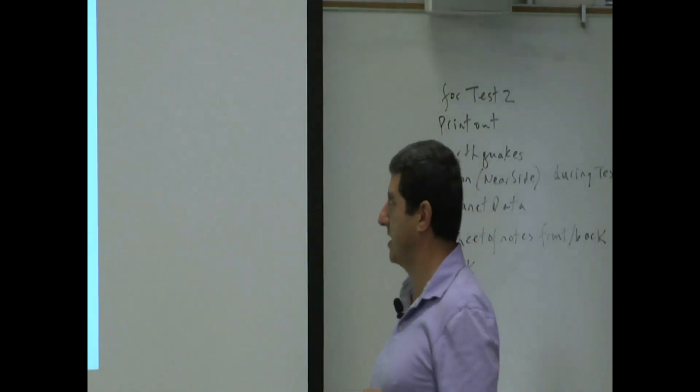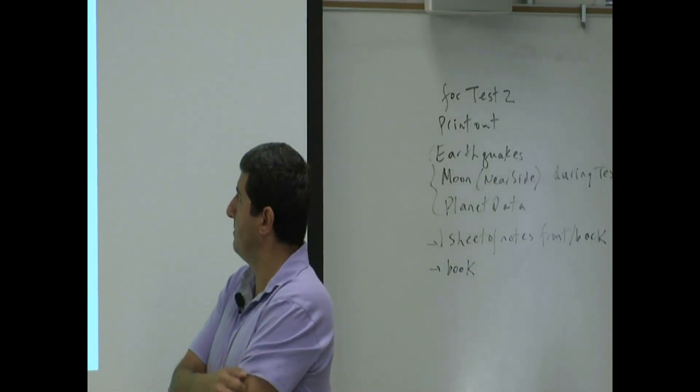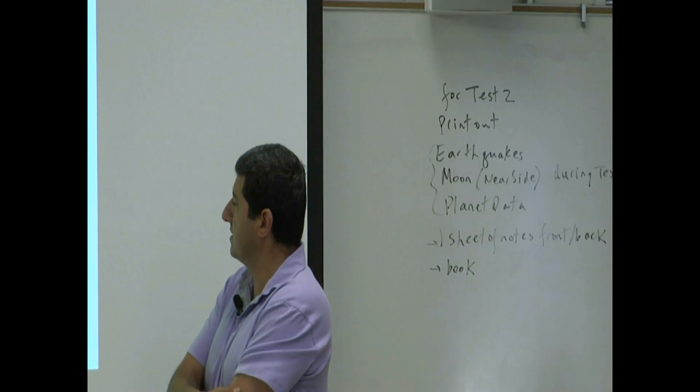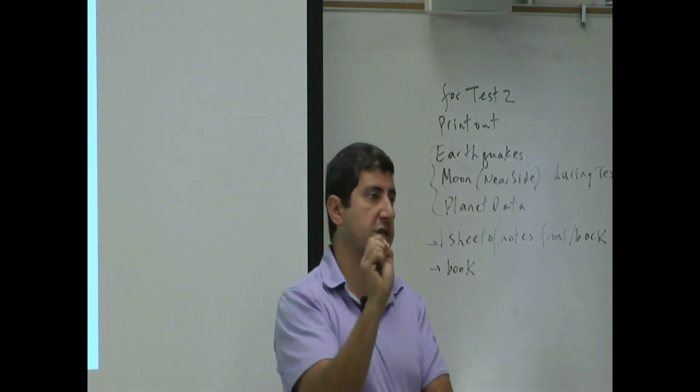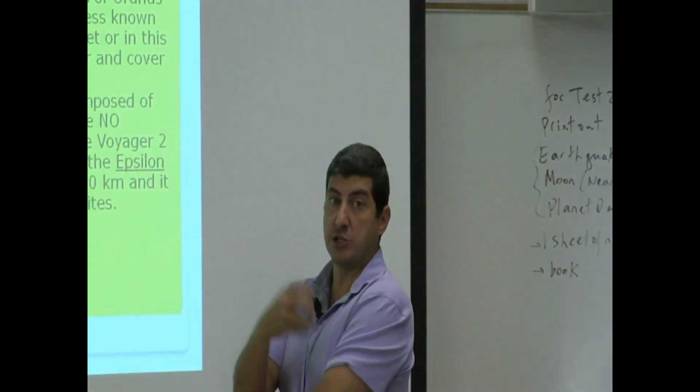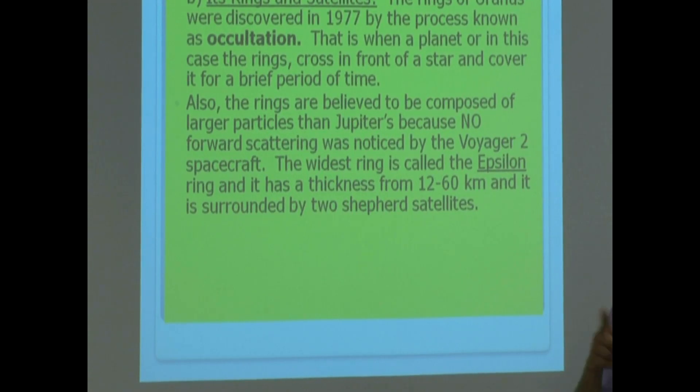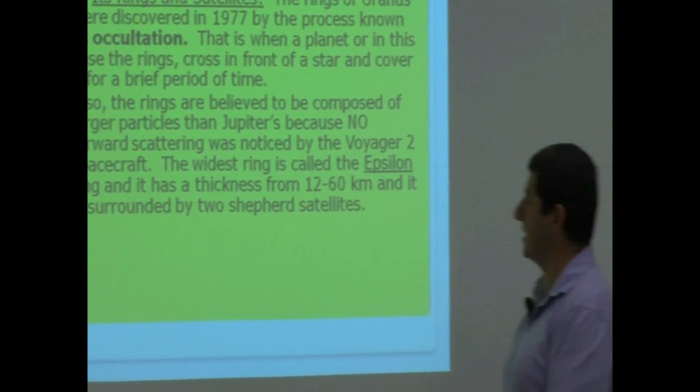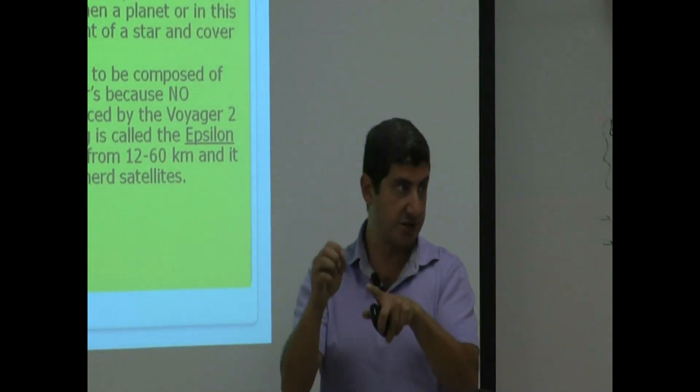The rings are believed to be composed of larger particles than Jupiter's because no forward scattering was noticed by the Voyager 2 spacecraft. Remember, forward scattering meant that the rings were composed of tiny particles, so these are larger. The widest ring is called the epsilon ring. Remember, the rings of Uranus were named after Greek letters. It has a thickness from 12 to 60 kilometers and is surrounded by two shepherd satellites.